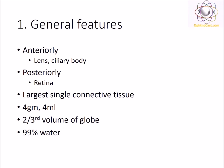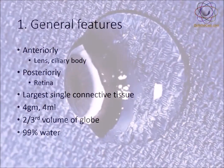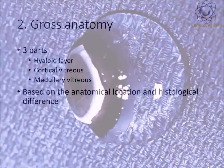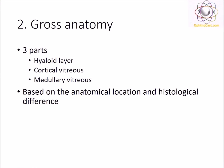This is a very popular image seen in various books depicting the structure of an intact vitreous body. This eye is dissected out of a young child — as we go ahead in this video, you will realize why the young child part is important. The vitreous body is anatomically divided into three parts: the hyaloid layer, cortical vitreous, and the medullary vitreous.